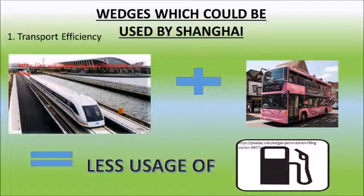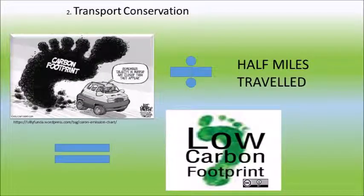Based on Shanghai's environmental issues mentioned in this presentation, Shanghai could make use of three stabilization wedges. The first one is transport efficiency, which states that a wedge of emission savings could be reached if the fuel efficiency of all cars projected for 2060 would be doubled from 30 miles per gallon, approximately 48.27 kilometers per 3.78 liters of fuel. Rail is the major mode of transport in Shanghai, so this wedge could also be achieved through usage of more public transport and creating vehicles with stronger lightweight materials. The second wedge is transport conservation — a wedge could be achieved if the number of kilometers traveled by cars is cut in half.